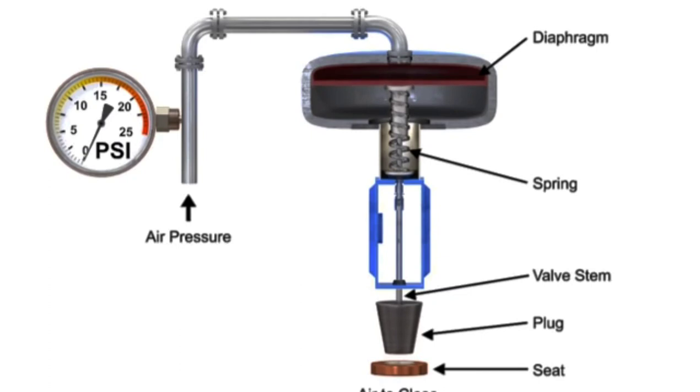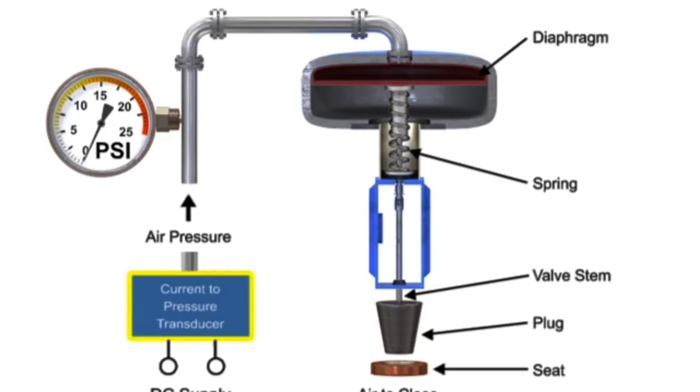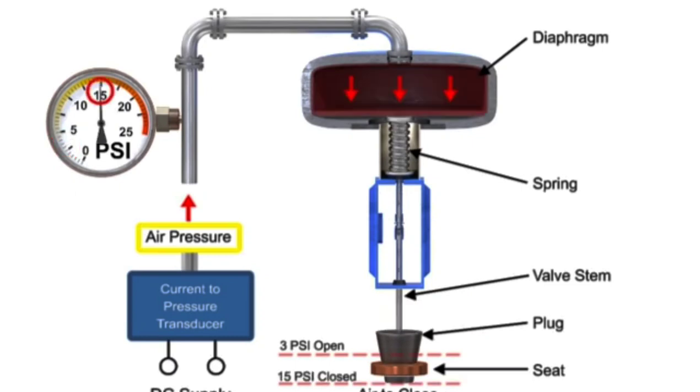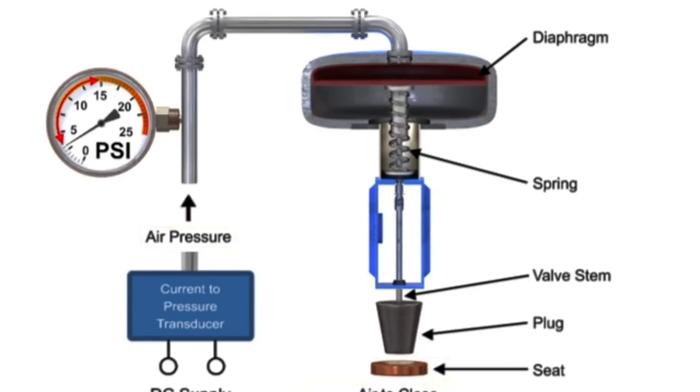To vary the position of the restrictor and flow through the valve, a current to pressure transducer can be used to provide a 3 to 15 PSI signal to the diaphragm. At 3 PSI, the valve is maintained open and at 15 PSI, the valve is maintained closed. Pressures between the 3 to 15 PSI range proportionally change the flow of the valve.